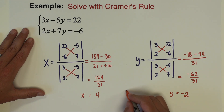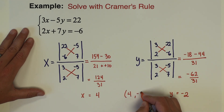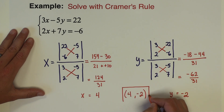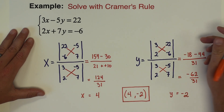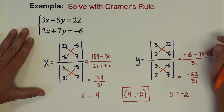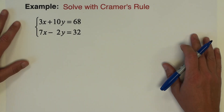So x equals 4 and y equals negative 2. Our solution is (4, negative 2). That is Cramer's Rule used to solve a 2 by 2 system of equations.